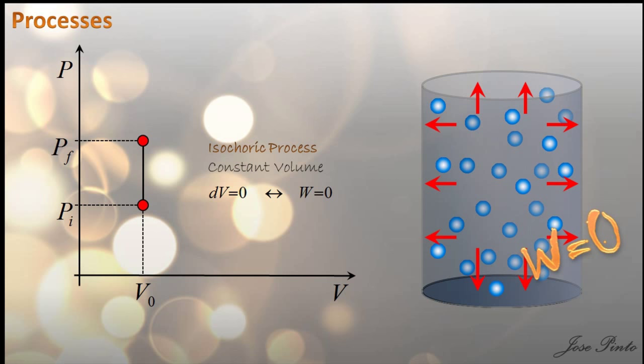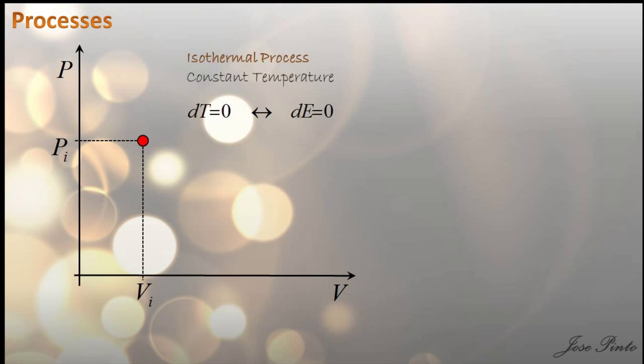Now let's look at the case where pressure changes as volume changes — the isothermal process. This is one where temperature is kept constant. But to know what path it takes in the diagram, we need to know how pressure changes as volume changes. In other words, we need to know the equation of state — something that relates temperature, pressure, and volume. So let's look at the case of the ideal gas.